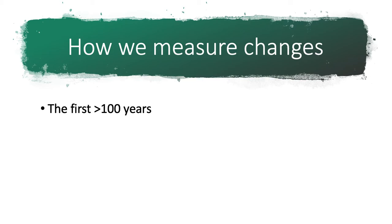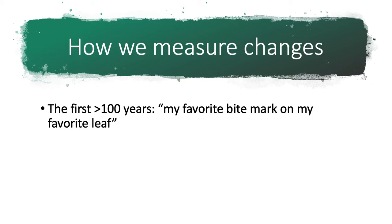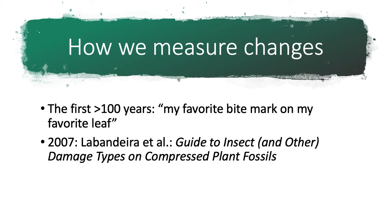Going back to the 1800s, paleobotanists would occasionally remark in their papers on holes that they found that insects had chewed in leaves. You can think of this as the 'my favorite bite mark on my favorite leaf' approach. I say this because data were not collected systematically, so there was no rigorous way to make comparisons — for example, if you wanted to compare the insect bite marks on Jurassic leaves to those on Cretaceous leaves.